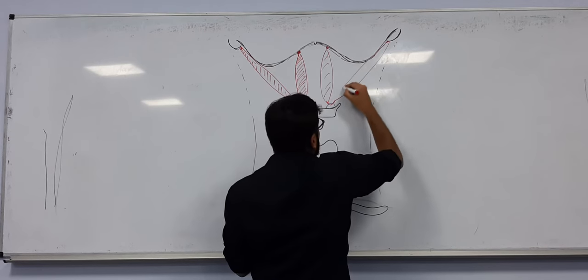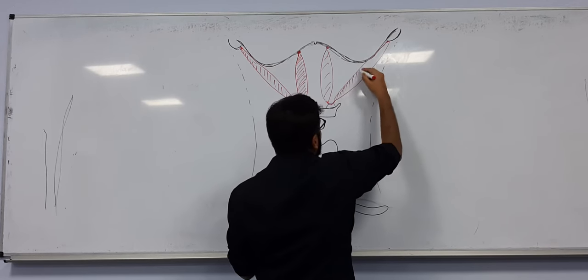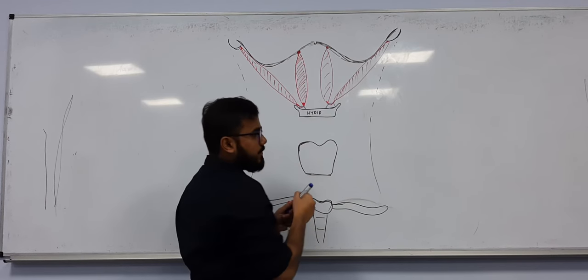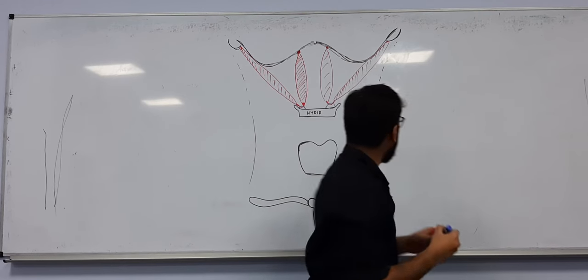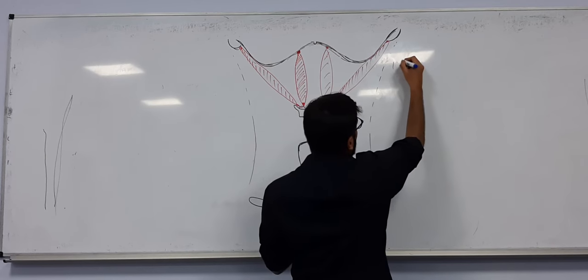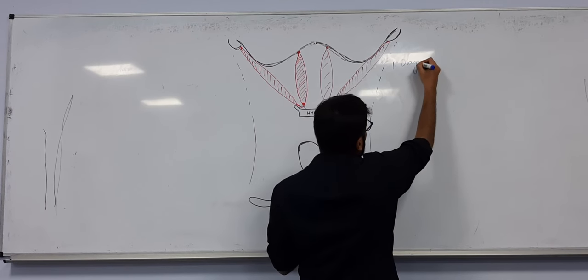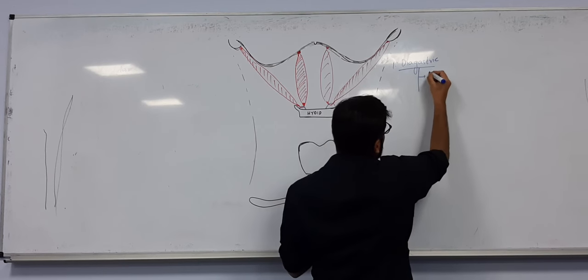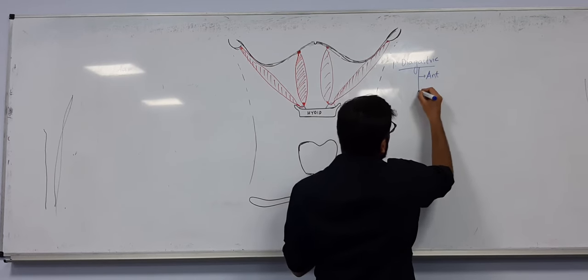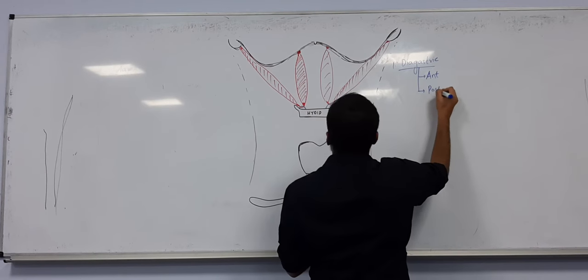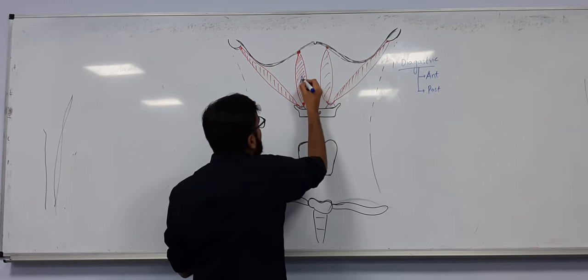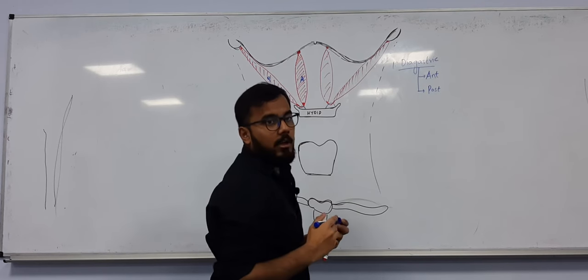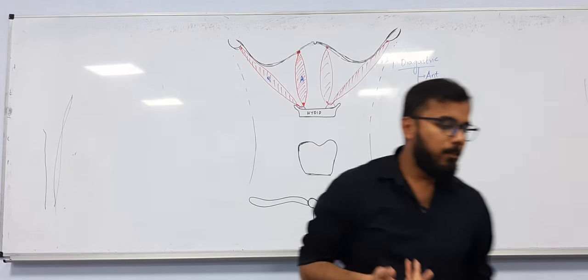This muscle has two parts: the anterior part and the posterior part. The muscle is called the digastric muscle. So this is the anterior belly of the digastric and this is the posterior belly of the digastric.